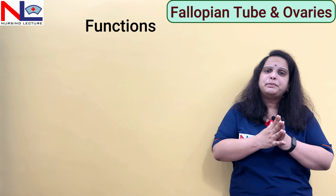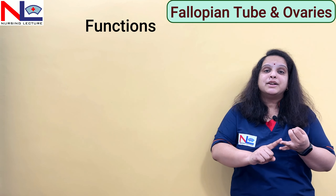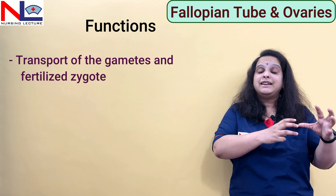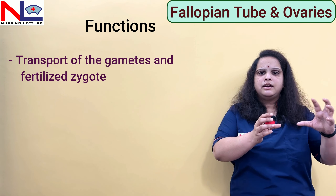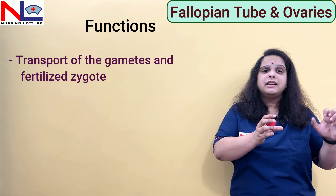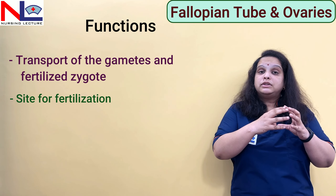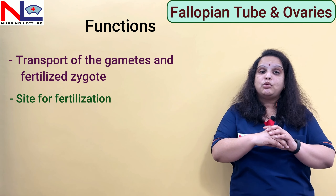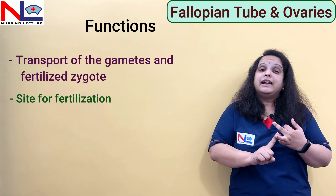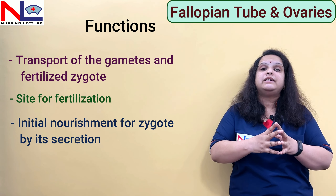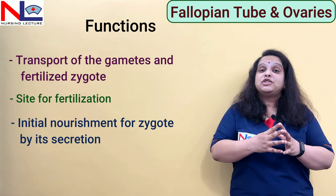The function of the fallopian tube: by the ciliary action of the mucosal lining and the peristaltic movement of the muscular layer, the mature gamete is allowed to move toward the fertilizing site, which is in the ampullary part. Similarly, the sperms also move toward the ampullary part, and the secondary oocyte, picked up by the fimbrial end of the infundibular part, is propelled toward the ampullary part. There they meet and form a zygote. Secondly, the tube releases certain substances responsible for the initial nourishment of the mature gametes as well as the zygote.